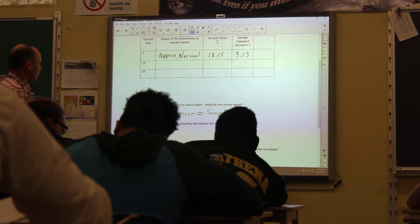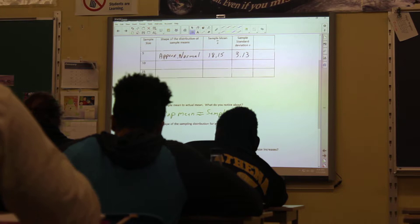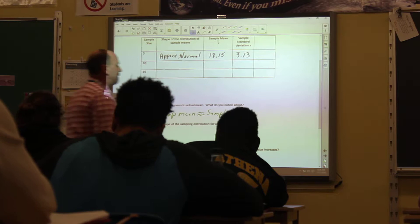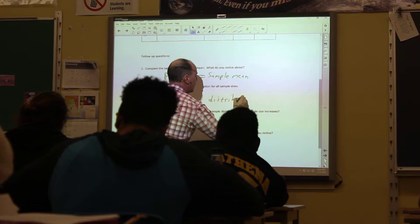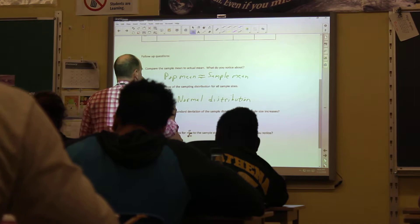Describe the shape of the sampling distribution for all sample sizes. So what happens when we take the mean? What's it look like? What shape does it look like? Normal. Normal. And I'm going to put down, they like this, nearly normal, because it might not be exactly normal, but it's close to it.